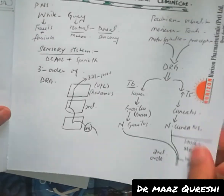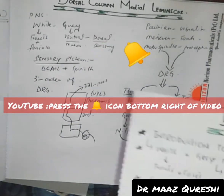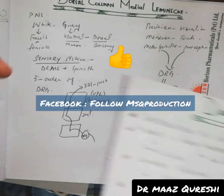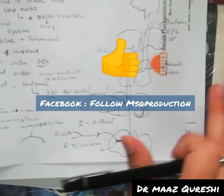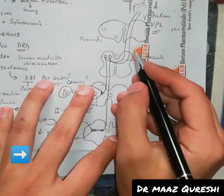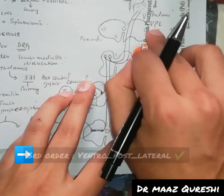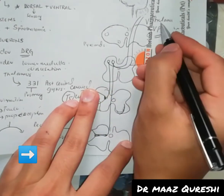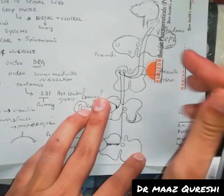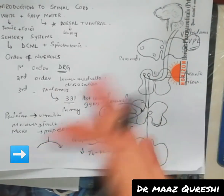The internal arcuate fibers are the second order neurons. These fibers then travel to the thalamus as the third order neuron, synapsing in the ventral posterior lateral (VPL) nucleus. From there they project to the primary somatosensory cortex, Brodmann areas 3, 2, and 1, where the sensory information is analyzed.